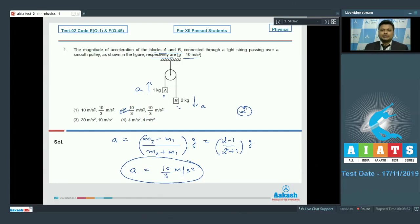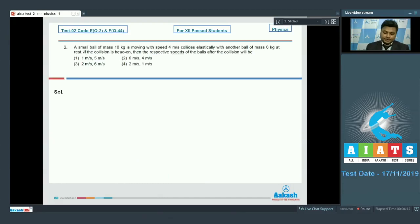Moving on to the next question, that is question number 2. A small ball of mass 10 kg is moving with speed 4 meter per second collides elastically with another ball of mass 6 kg at rest. If the collision is head on, then the respective speed of the balls after the collision will be what? Since the collision is elastic, so E will be given by 1.